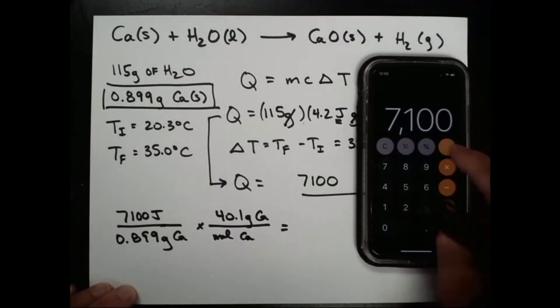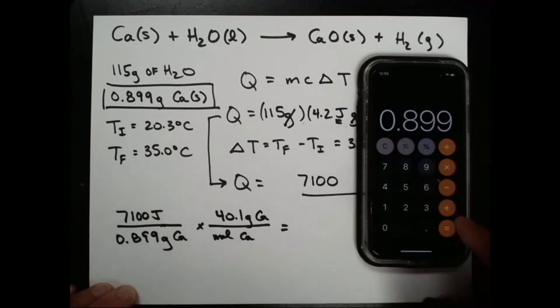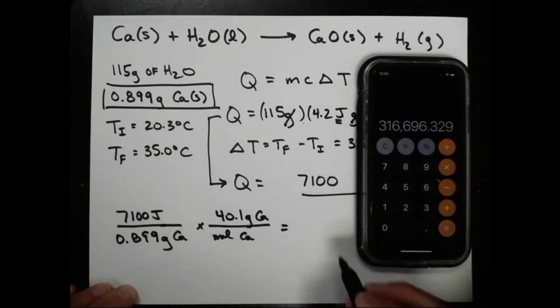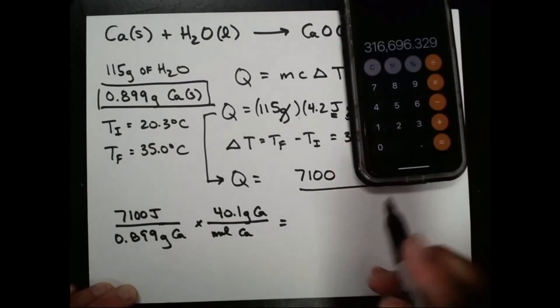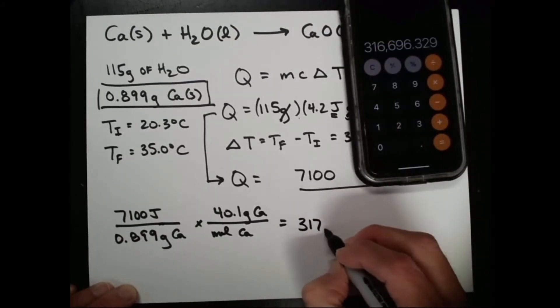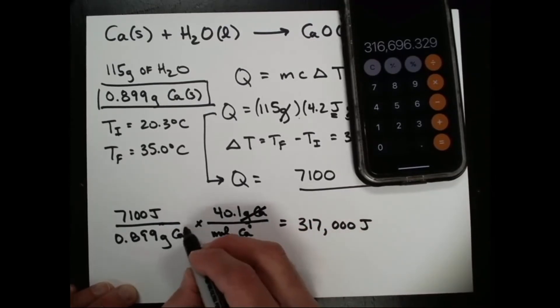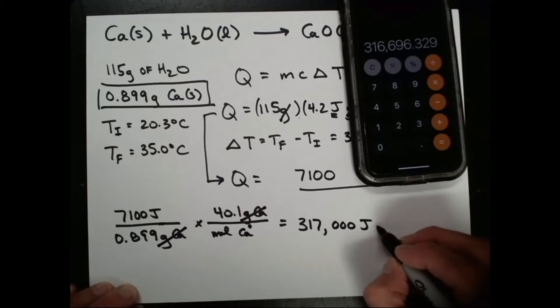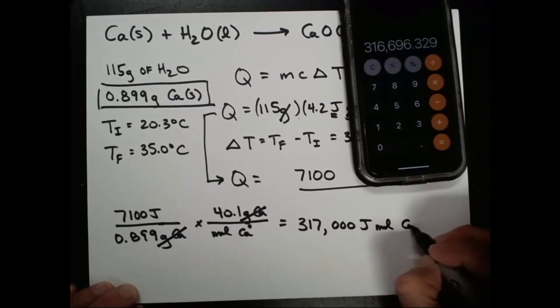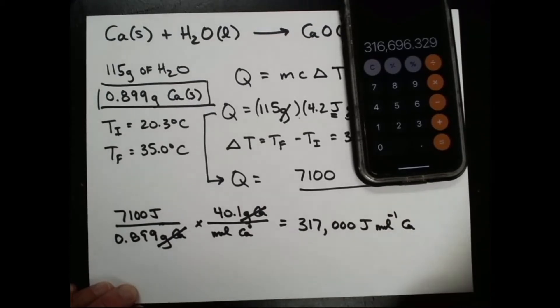7,100 divided by 0.899, multiply by 40.1. We can see that that's going to be 317,000, rounding up, joules. This gram of calcium cancels this gram of calcium for every mole of calcium that reacted.